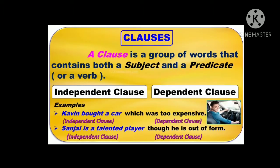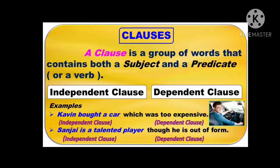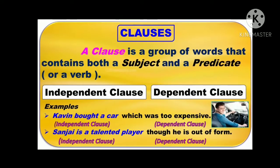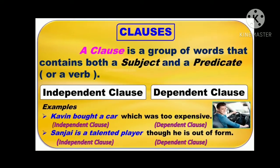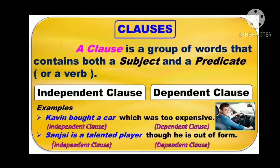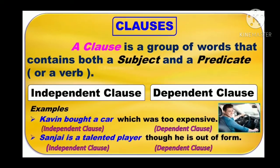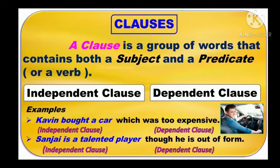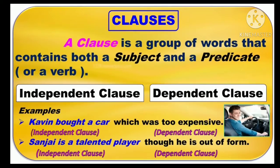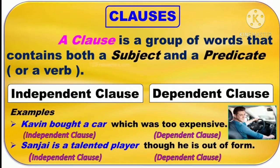There are two types of clauses. They are independent clause and dependent clause. Look at the examples: 'Kavin bought a car which was too expensive.' And: 'Sanjay is a talented player though he is out of form.' In these two sentences, we have both independent clause and dependent clause.